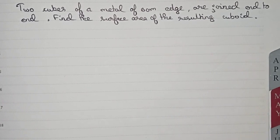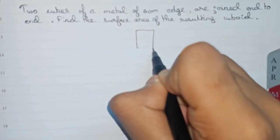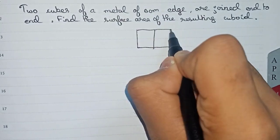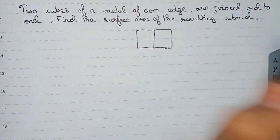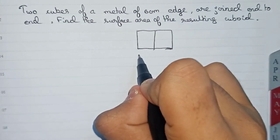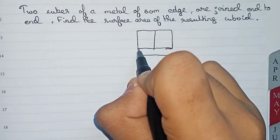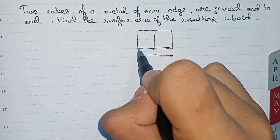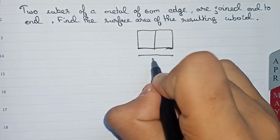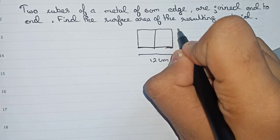First, let us draw a diagram. This is one cube and this is another cube. I am drawing a two-dimensional diagram. This length will be six and this is six, as it is given six edge. So six plus six, that will be 12 centimeter, and this side will be six centimeter.